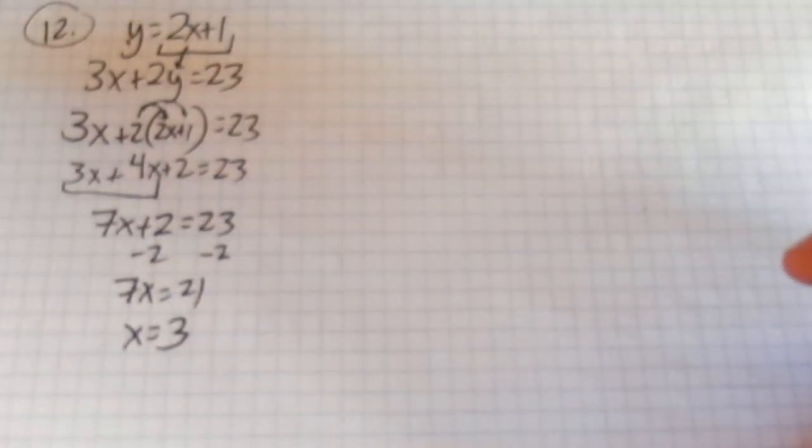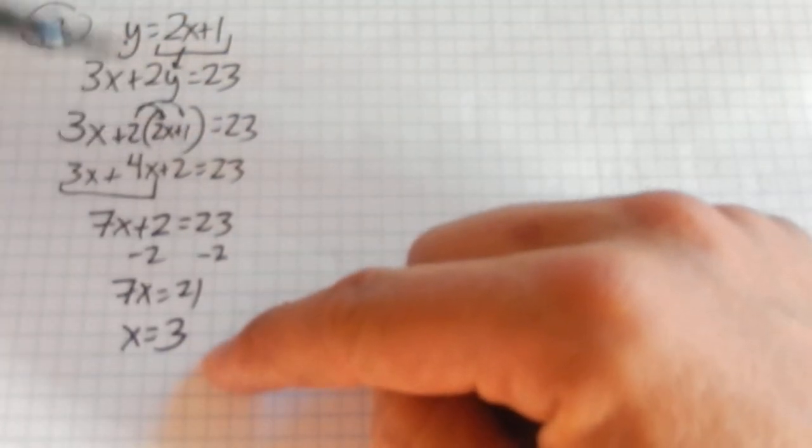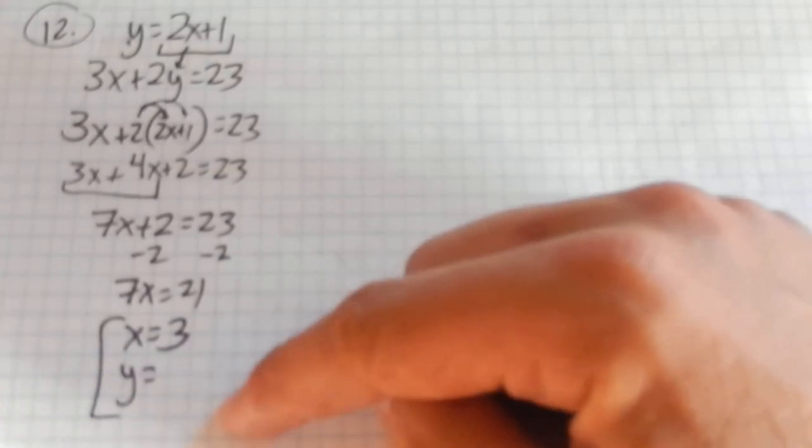And it's so tempting to work so hard and just stop here. Hey, x is 3, I'm done. But remember, when you're solving a system, you're looking for both x and y. You want them both.